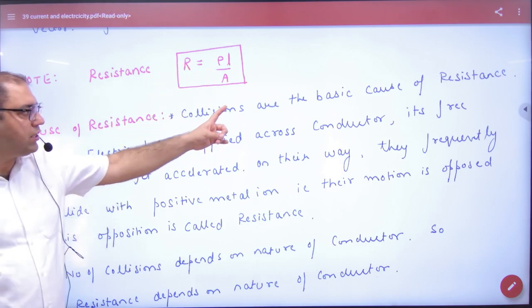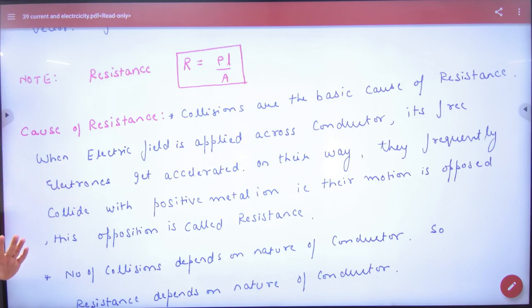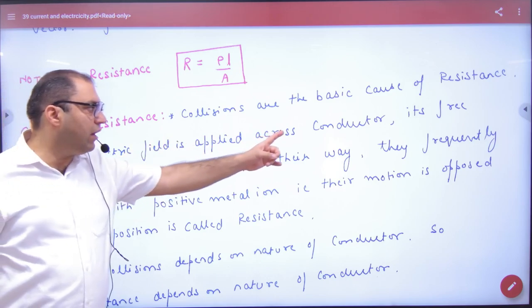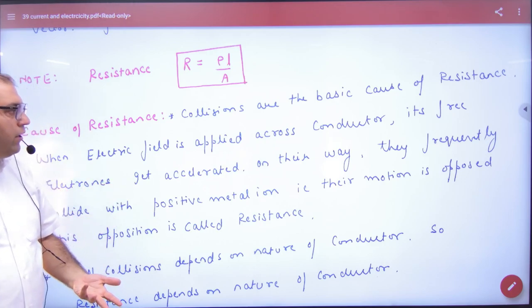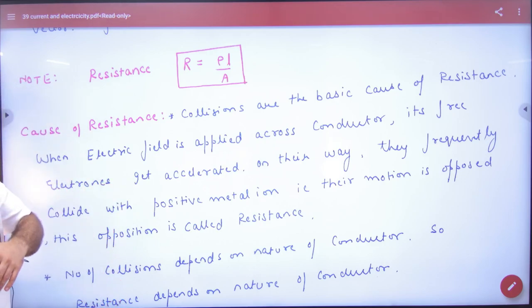Collisions are the basic cause of resistance. When electric field is applied across the conductor, its free electrons get accelerated on their way. When electric field is applied, free electrons move.